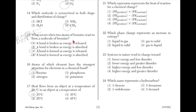Which expression represents the heat of reaction for a chemical change? The answer is 2: the PE of the products minus the PE of the reactants, because you are trying to find the heat of reaction for the entire chemical equation. It makes sense to find the heat of reaction, or potential energy, as the difference between the products and the reactants.